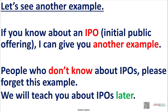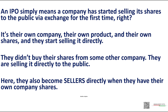Let's see another example. If you know about an IPO — initial public offering — I can give you another example. An IPO simply means a company has started selling its shares to the public via exchange for the first time. It's their own company, their own product, and their own shares, and they start selling it directly. They didn't buy their shares from some other company — they are selling it directly to the public. Here, they also become sellers directly when they have their own company shares.